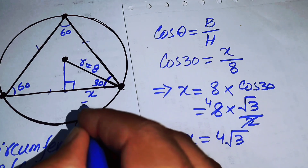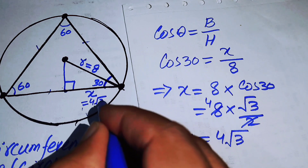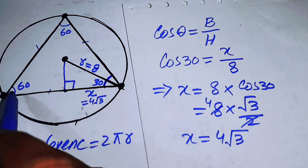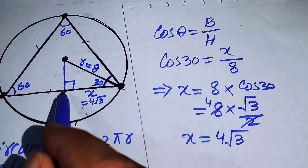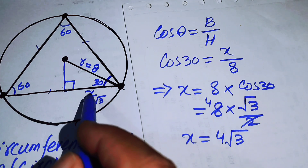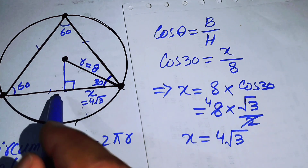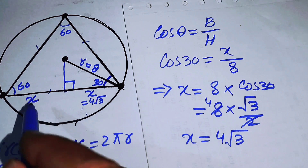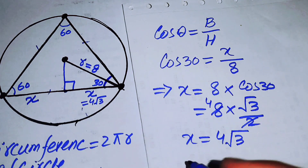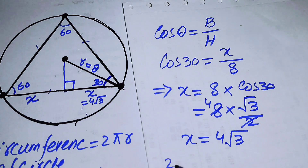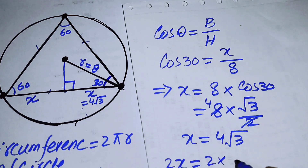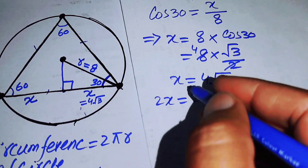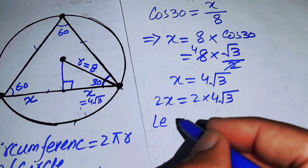The value of x is 4√3. Because the perpendicular from the center divides the side of the equilateral triangle into two equal parts, the total side length is 2x = 2 × 4√3 = 8√3.